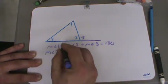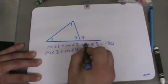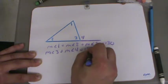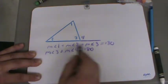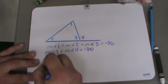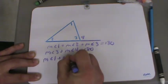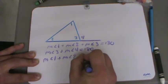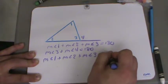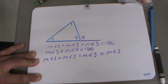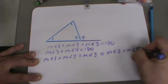So the measure of angle 3 plus the measure of angle 4 is going to give you 180 degrees. That means that this must be equal to this — so the measure of angle 1 plus the measure of angle 2 plus the measure of angle 3 must equal the measure of angle 3 plus the measure of angle 4.